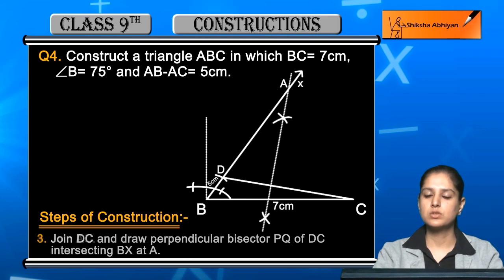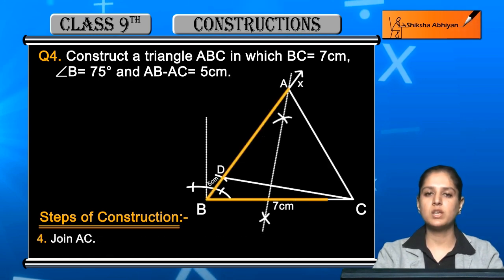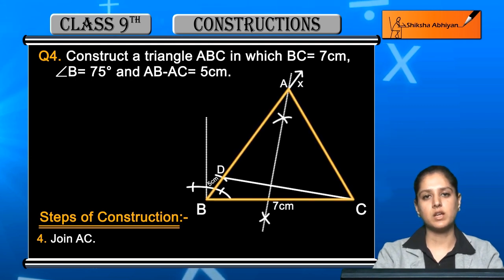Last step: Join A to C. When you join A to C, then A, B, C will form a triangle which is the required triangle.